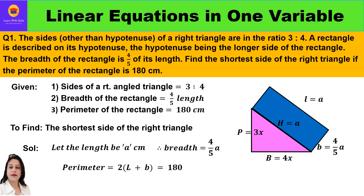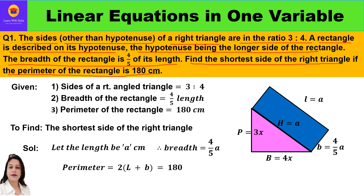The first question is: the sides other than hypotenuse of a right triangle are in the ratio of 3 to 4. A rectangle is described on its hypotenuse, the hypotenuse being the longer side of the rectangle. The breadth of the rectangle is 4/5 of its length. Find the shortest side of the right triangle if the perimeter of the rectangle is 180 centimeters. By the look of the question it looks a little complicated, so let me explain with the help of a figure.